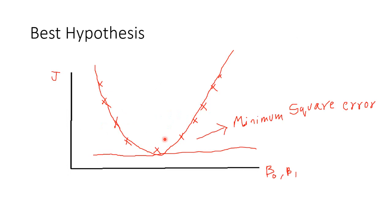When we have cost function values for all hypotheses, we plot them on a graph with the cost function on the y-axis and beta0 and beta1 on the x-axis. The place where the cost function takes the minimum value is the best hypothesis. This is also known as the minimum squared error.